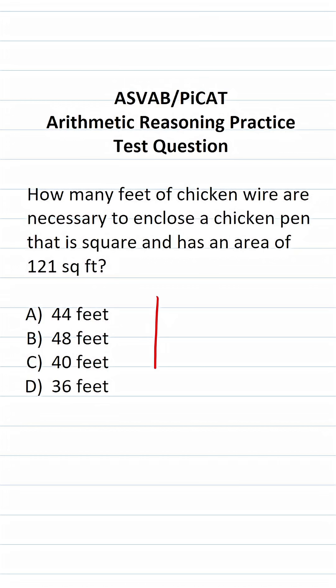All right, so on the ASVAB and PiCAT, you're not given a reference sheet or a calculator. For this one, you have to understand that we're going to be given the area of a square and we're being asked to find its perimeter.